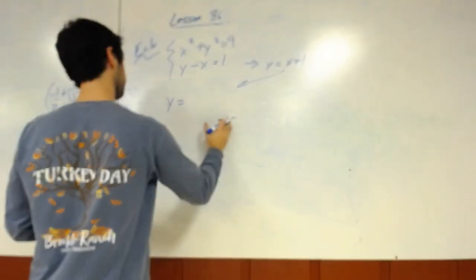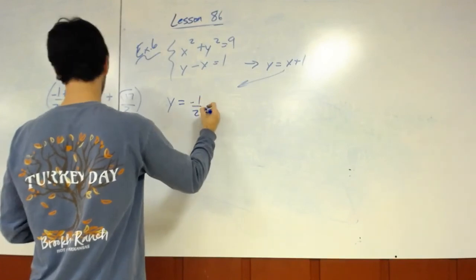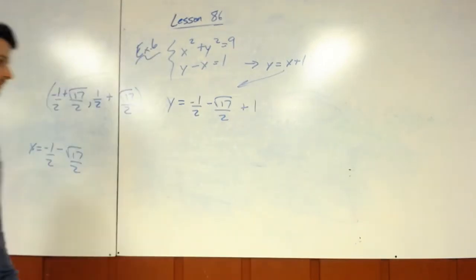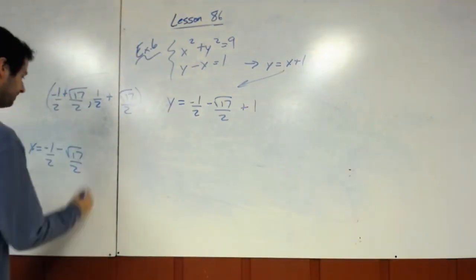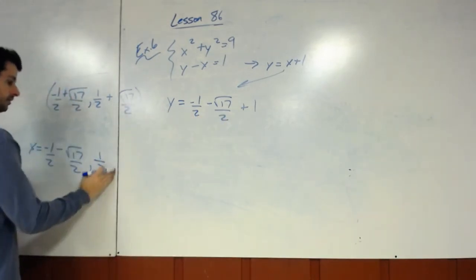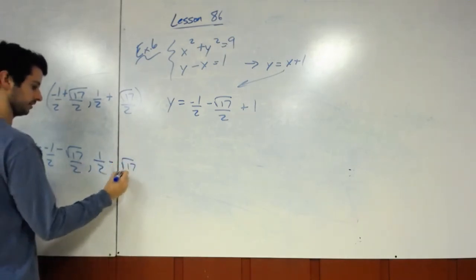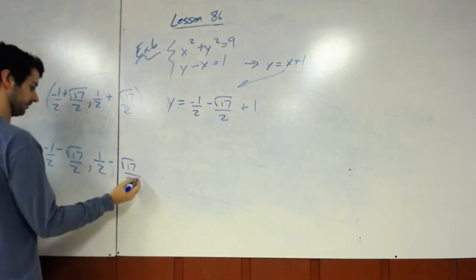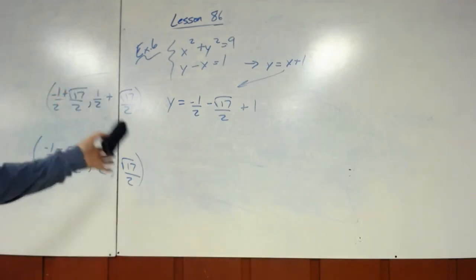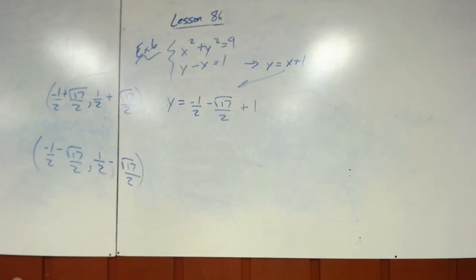Now we just got to plug in negative 1 over 2 minus radical 17 over 2. And notice it stays the same as well. When we add these together, that's a positive 1 half. And the only difference is the sign in the middle. It's a negative radical 17 over 2. So when x is negative 1 half minus radical 17 over 2, y would be positive 1 half minus radical 17 over 2. Looks like a lot. It's a lot of steps, but not a difficult process just using what we know. And that is the end of lesson 86.